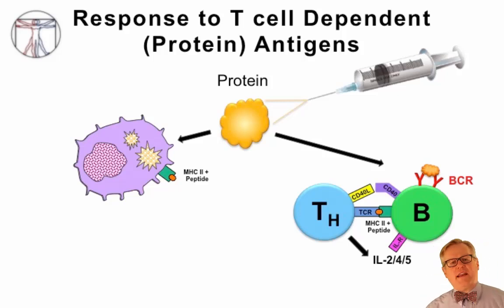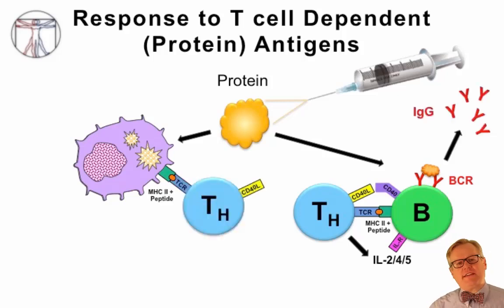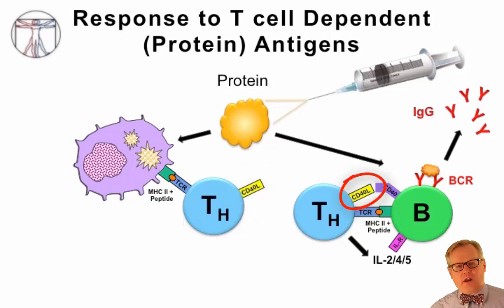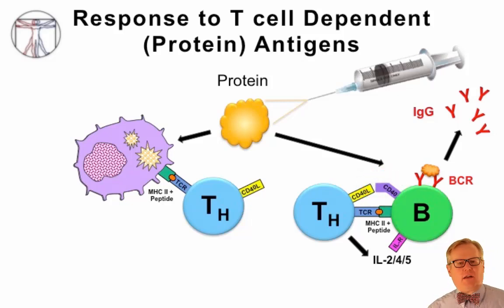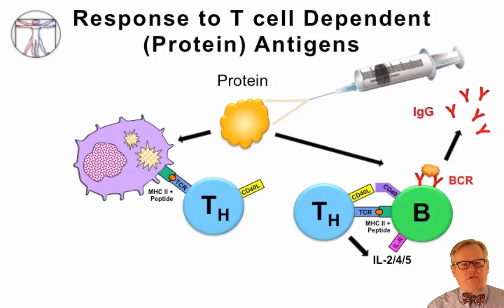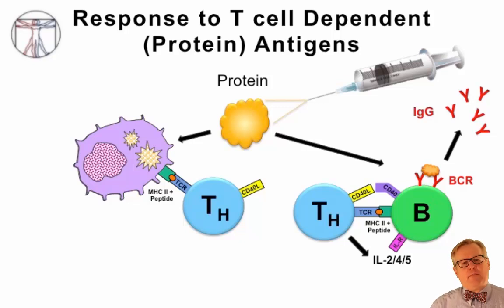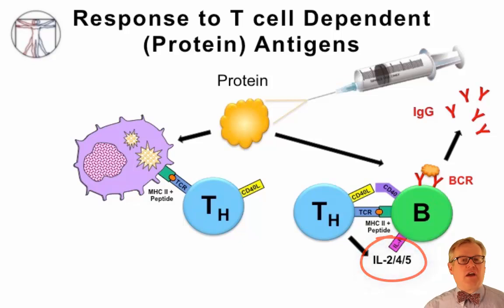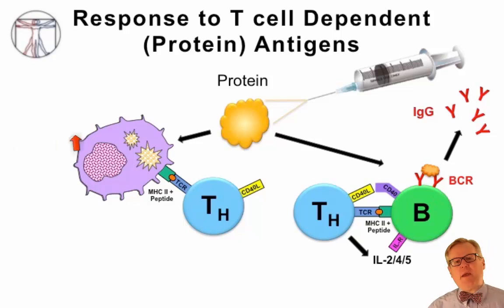The way this is accomplished is that activated T-cells express CD40 ligand on their cell surface. CD40 ligand interacts with CD40 on the surface of the B-cell, providing a signal to tell that B-cell it is responding to a foreign antigen and that the T-cell will help it switch from making IgM to making IgG and IgA. In addition, the T-cell provides extra help by secreting cytokines such as interleukin-4 and interleukin-5 that stimulate B-cells to undergo immunoglobulin class switching and clonally expand to make a large amount of antibody.